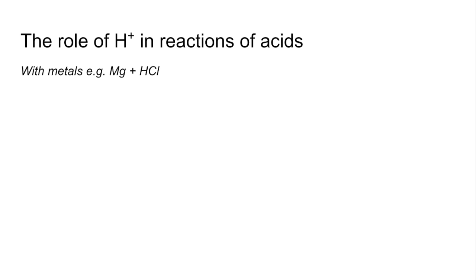The first one we'll look at is with metals, so magnesium plus HCl is my example. There's the ionic equation. I'm leaving out the aqueous chloride ions because they would appear on both sides of the equation—they're spectator ions, so we can ignore them. You can see clearly that the H⁺ ion is reacting with the magnesium.